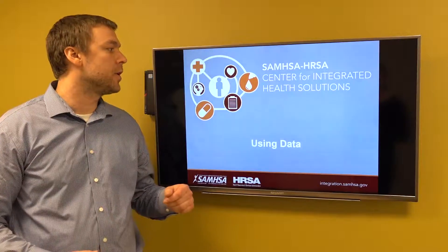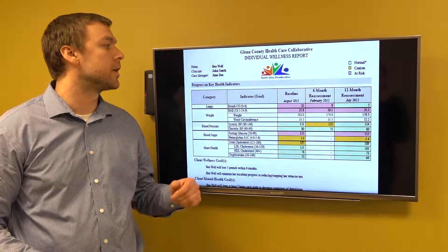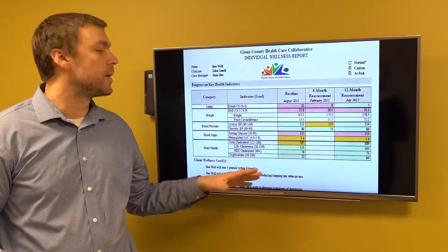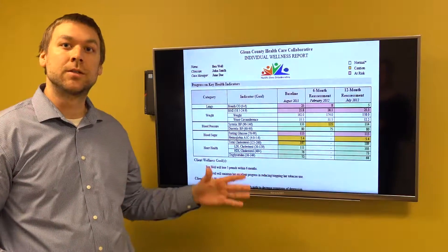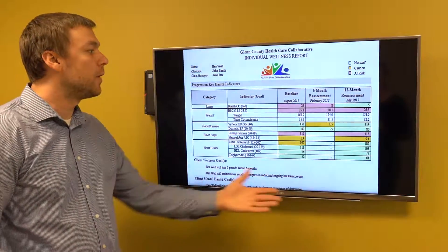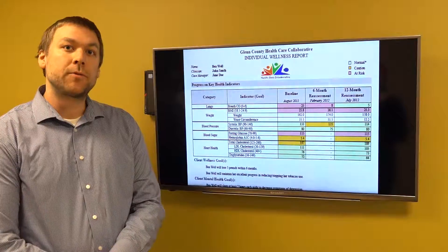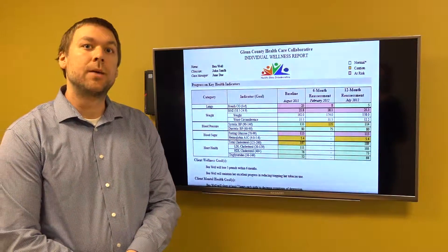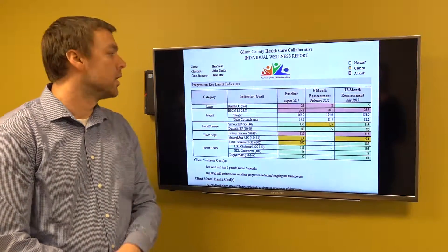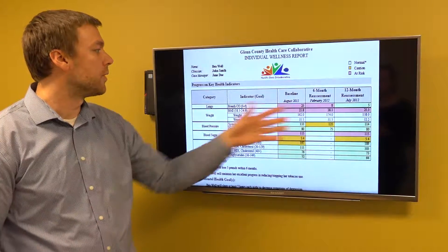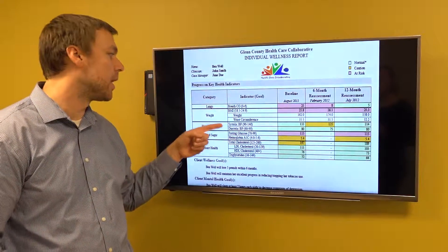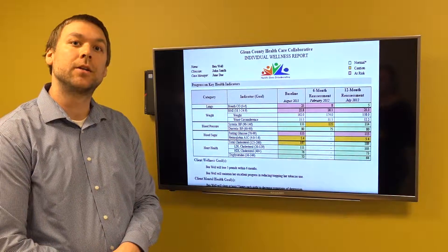There are three buckets. The first is sharing information with the people who are receiving services. This is an example of an individual wellness report. The bulk of the information comes from the NOMS interview and the health indicators that you collect. You see the individual's health information over time — BMI, blood pressure, all the health indicators.